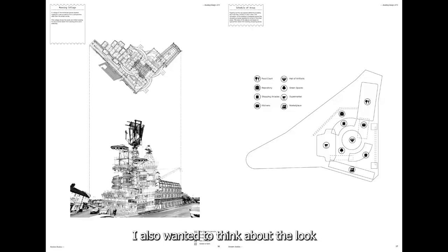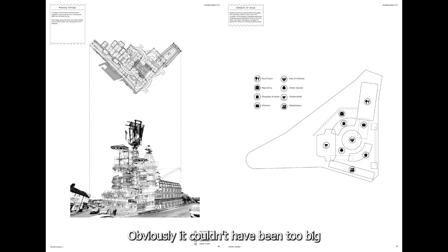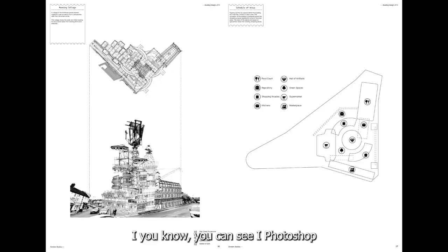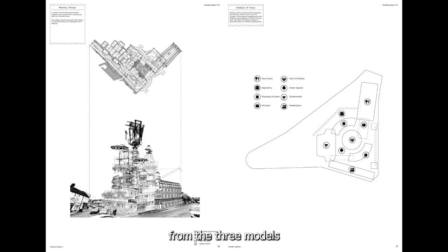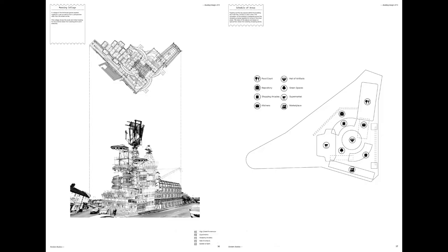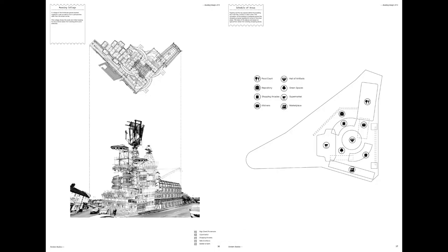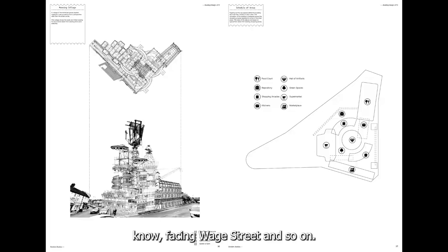While doing that I also wanted to think about the look, feel, and scale of the building in relation to the town hall itself. Obviously it couldn't be too big because I wanted it to remain subservient to the rest of the surroundings. This was an early concept — I Photoshopped some of the sketches I did earlier, some perspectives from the three models I was designing. It's all very conceptual at this stage. I then also wanted to identify the key areas, so I created a schedule of areas and a circulation diagram, just to better understand how people would travel around the building, what's linked together, what's more important, and what's facing which street.